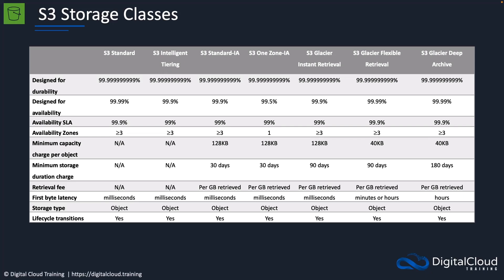Standard-IA is for infrequently accessed data. You get a lower cost for storing your data, but you'll pay for the amount of data you retrieve, and there's a minimum storage duration and a minimum capacity charge per object, so you have to account for those. One Zone-IA means you're lowering the amount of availability you get, but again, you're dropping the price point.